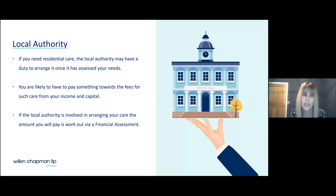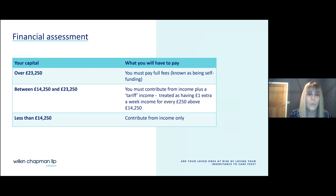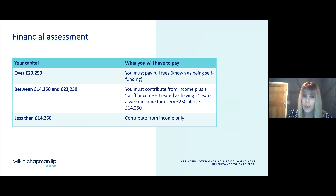If the local authority is involved, the amount you pay is worked out via a financial assessment. The starting point is your capital. If you have capital worth over £23,250, you must pay the full cost of your care — this is known as being a self-funder. If you have less than £14,250 of capital, you contribute from your income but not your capital. If you have between £14,250 and £23,250, you contribute from your income plus a tariff income: you are treated as having £1 extra per week of income for every £250 you have over and above the £14,250.